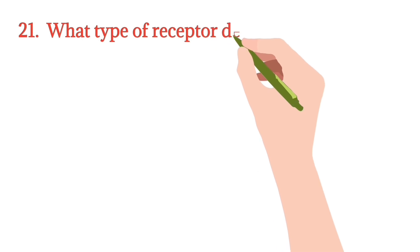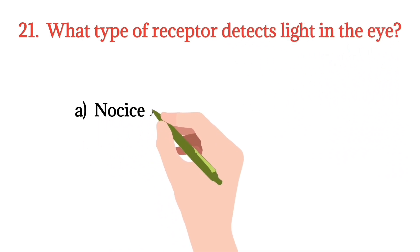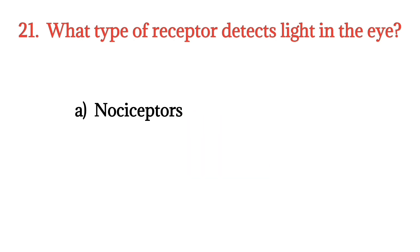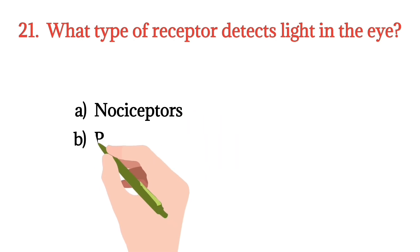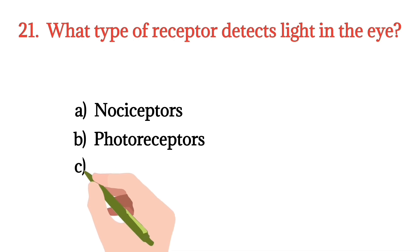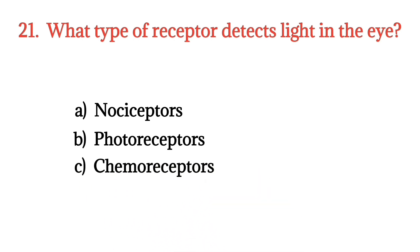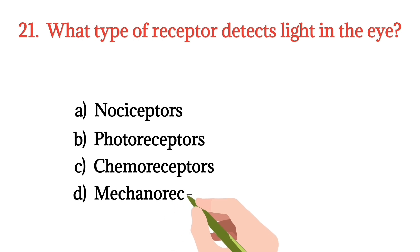MCQ number 21. What type of receptor detects light in the eye? Option A: Nociceptor. Option B: Photoreceptor. Option C: Chemoreceptor. Option D: Mechanoreceptor. The right option is Option B.